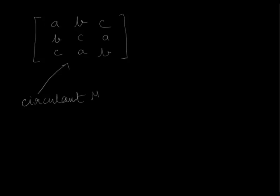Hi guys, in this video I am going to talk about circulant matrix or circulant determinant. So what it really is is just a simple matrix which looks something like this: a, b, c, then b, c, a, and then c, a, and b. So this is called a circulant matrix.